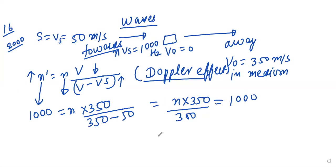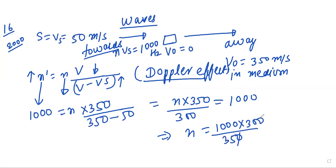Solving for n: n = 1000 × 300 / 350, which gives n = 857.14 hertz. This is for the first case only, when the source is moving towards the observer.